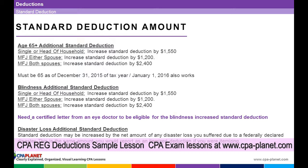Blindness: single or head of household — $1,550. Married filing jointly — exactly the same amounts — $1,200 or $2,400. So for both age 65-plus and blindness, the additional amounts are $1,550 and $1,200.